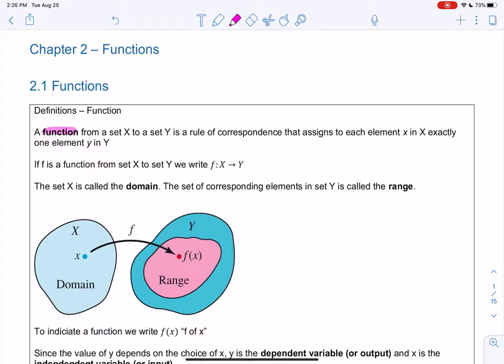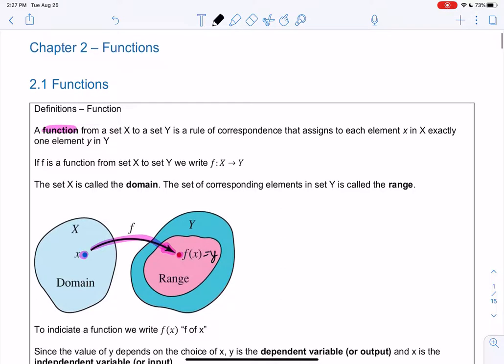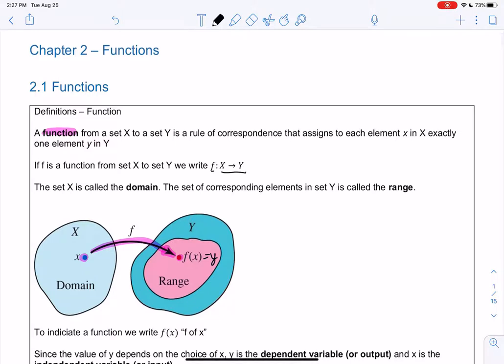So a function goes from set x to set y. Sets are just like these groups of numbers, and it's a rule. It's going to take an element from x and assign it an element in y that we usually call f of x or y. Sometimes we can write f from x to y. Essentially, it's saying we're going from x and we're outputting y.